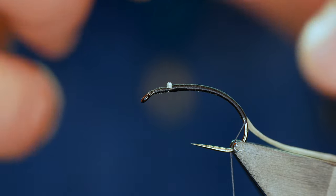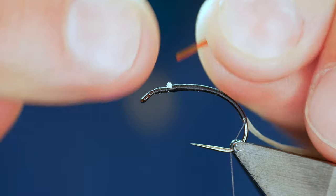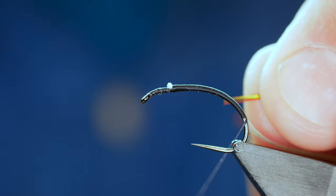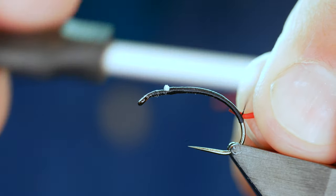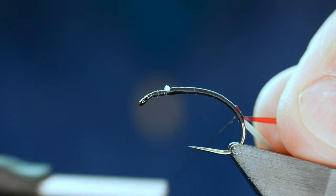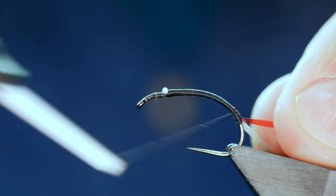And what I want to use is the deep red for this particular fly. So when I tie it in I want the shiny video tape side to be down onto the shank of the hook. I'm going to bring my thread round and catch that in.